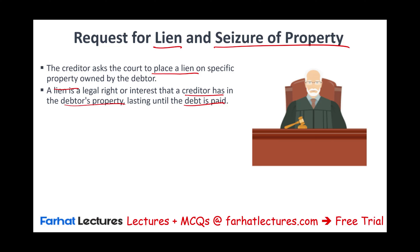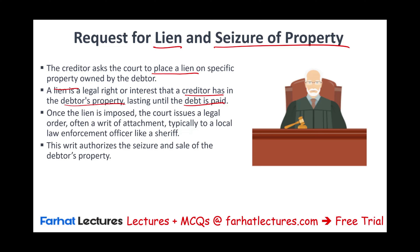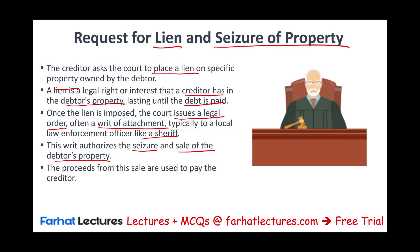And how does that put pressure on the debtor? Well, if you own a home and they put a lien on it, you can't sell it without giving them their share. Once a lien is imposed, the court issues a legal order — often a writ of attachment — typically to a local law enforcement like a sheriff. The writ authorizes the seizure and sale of the debtor's property, and the proceeds from the sale are used to pay the creditor.